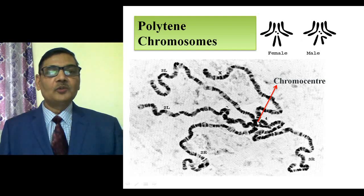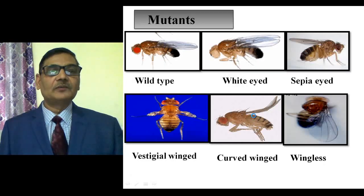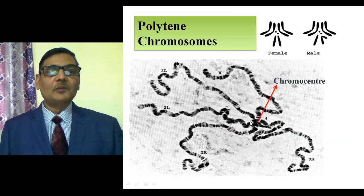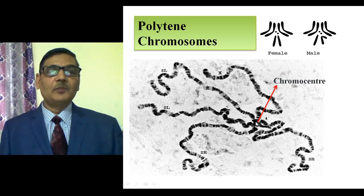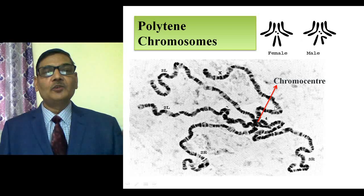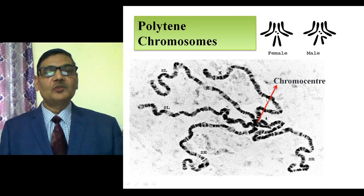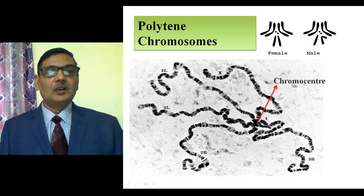Polytene chromosomes can be prepared from the salivary glands of the third-instar larva. You dissect the salivary gland, stain it in aceto-carmine or lacto-aceto-orcein, wait for some time, and then squash it to prepare the polytene chromosome. In this polytene chromosome, the centromeres of all chromosomes fuse together to form a chromocenter, and then paternal and maternal chromosomes pair throughout their length. You can identify the X chromosome arm and autosomal arms based on their distinct banding patterns.